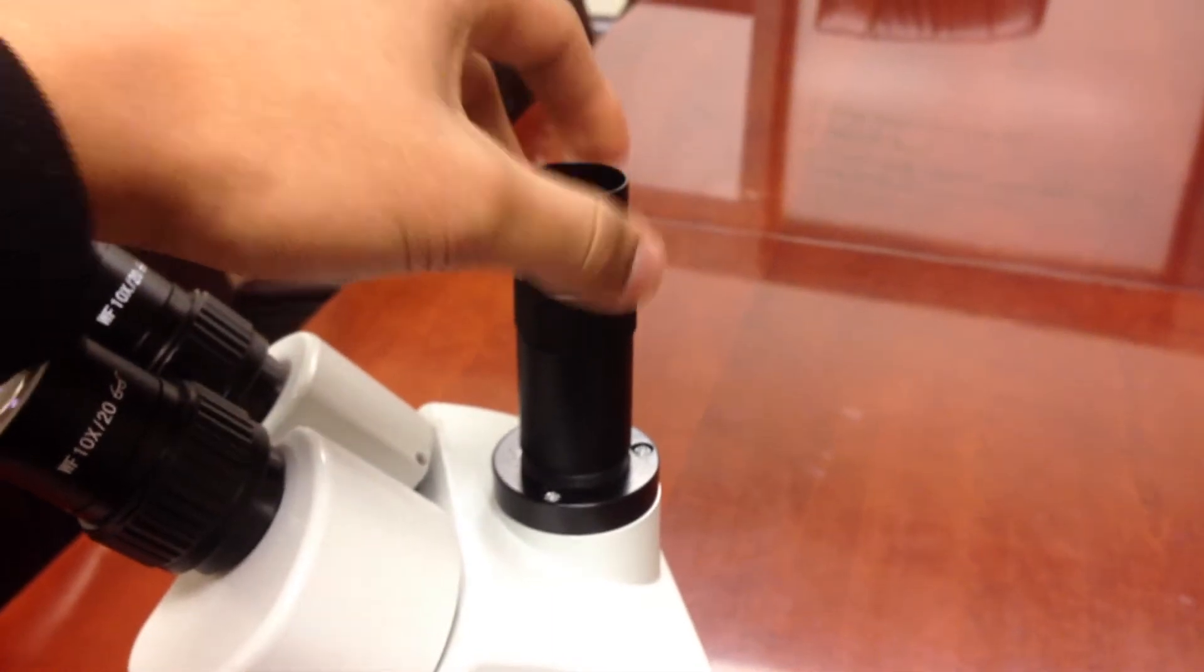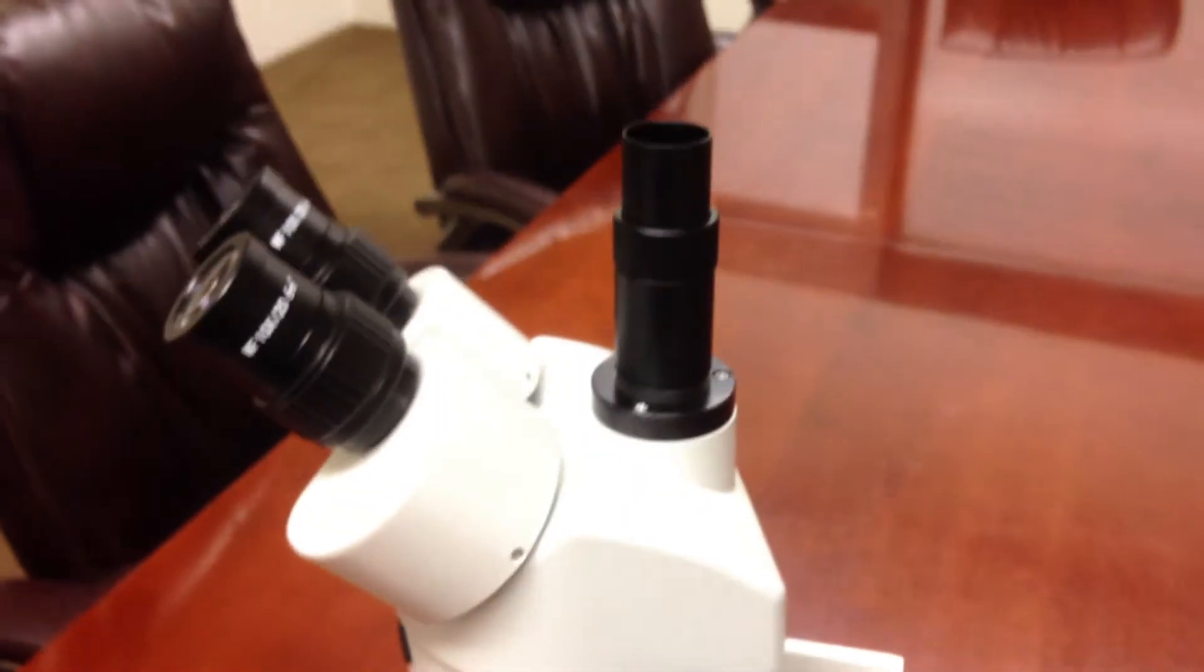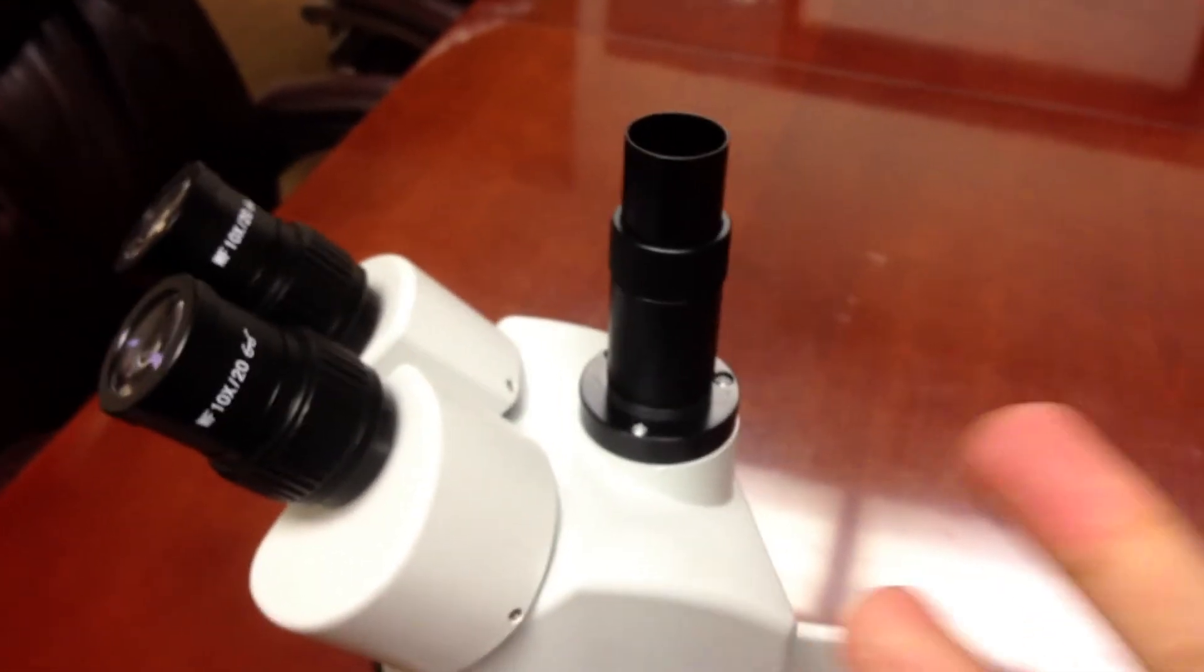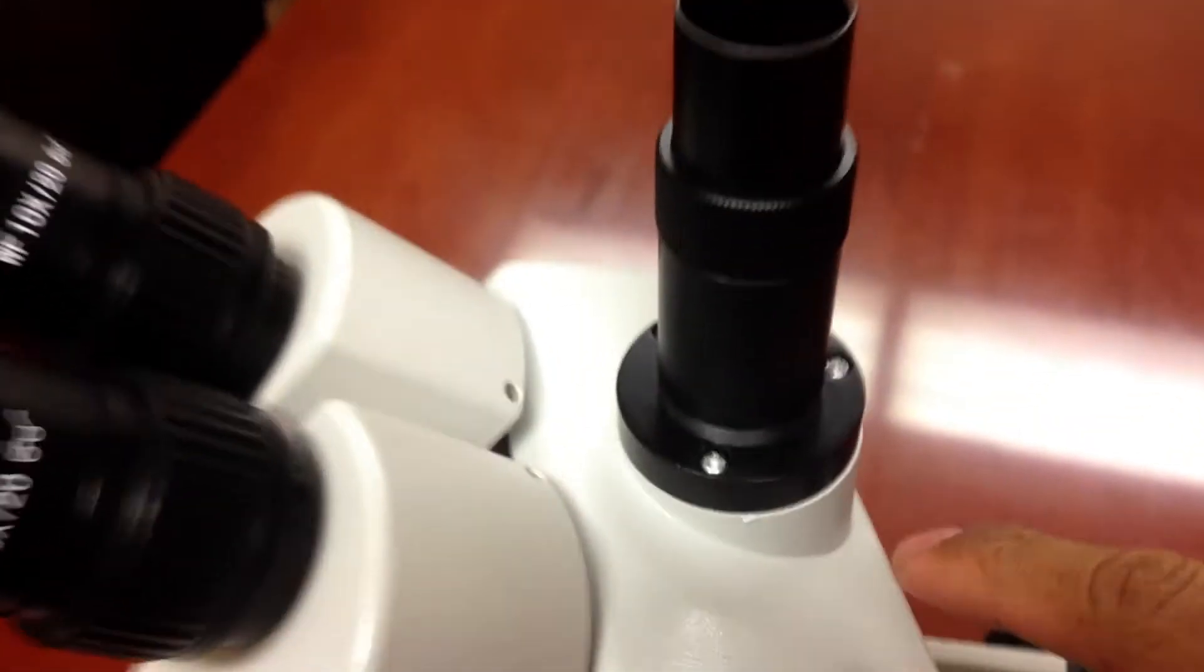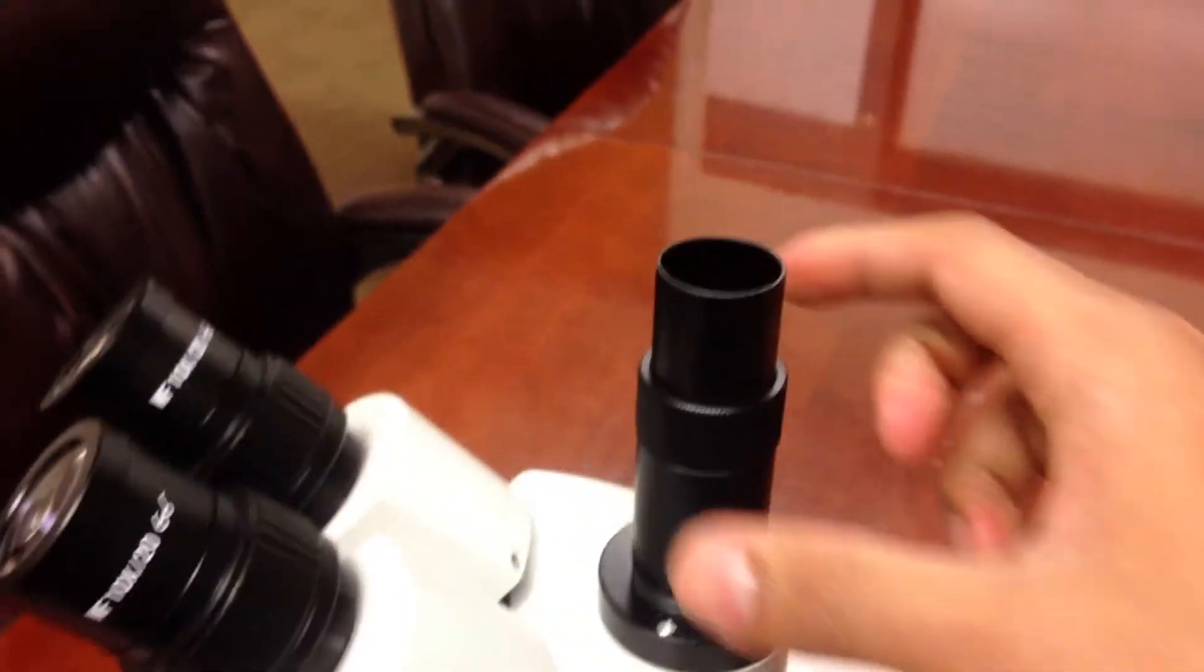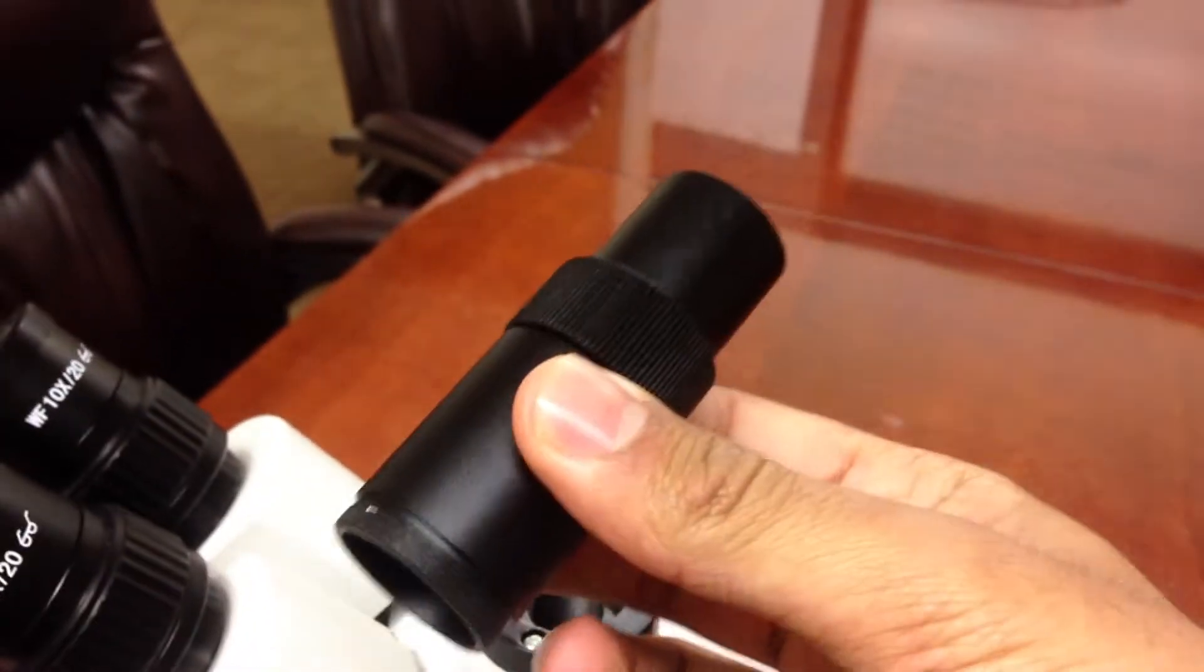So when mounting the adapter, what you're supposed to do is basically unscrew the trinocular port. But when I say unscrew the trinocular port, I don't want you to unscrew the one, two, and three Phillips head screws. Rather than doing that, I just want you to take out the long tube.